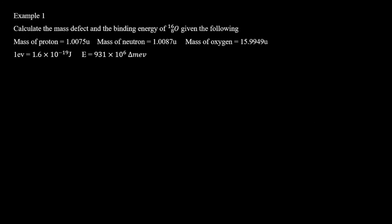Example one: calculate the mass defect and binding energy of oxygen, given that the mass of a proton is 1.0075 u, the mass of a neutron is 1.0087 u, the mass of oxygen is given, one electron volt is given, and the binding energy formula is also given. Let's write down our solution.